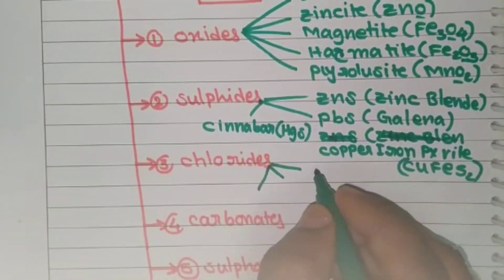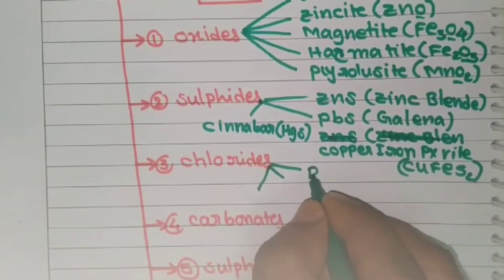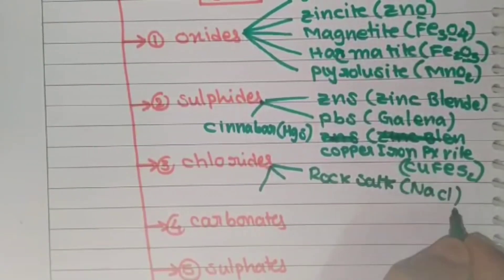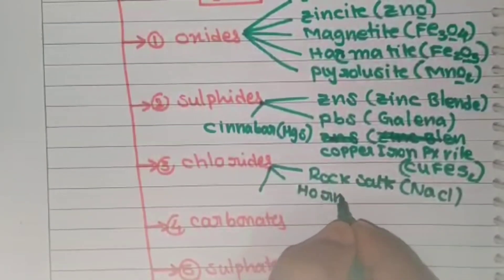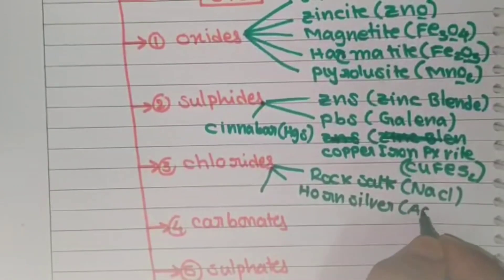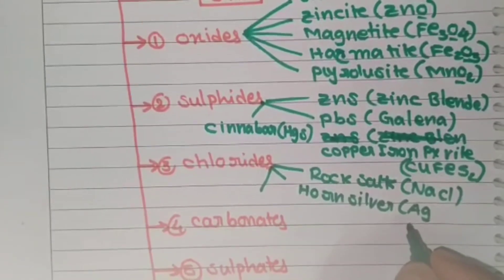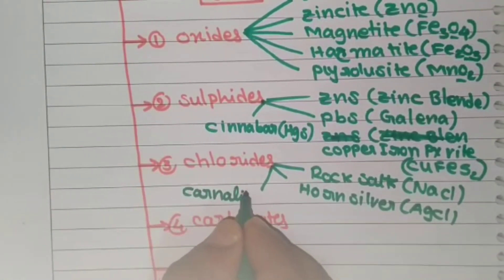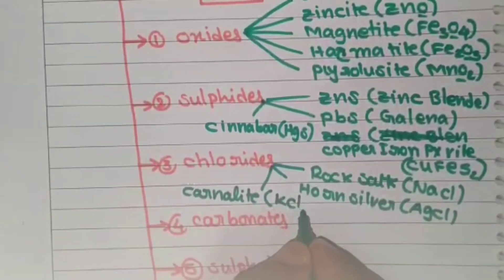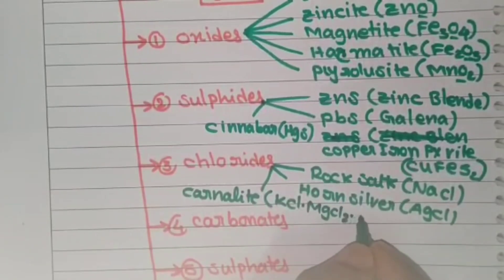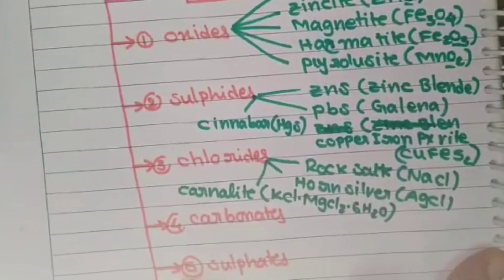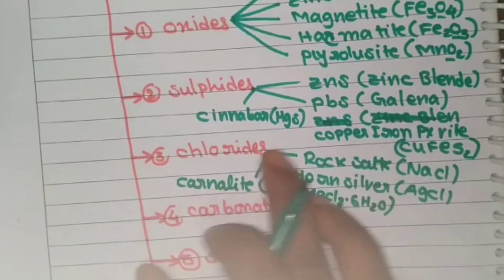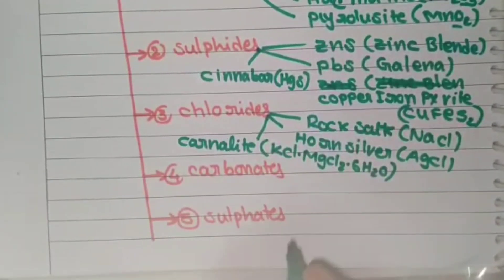Coming to the chlorides, there are only three. The first is rock salt, which is NaCl — the common salt. Next is horn silver, which is AgCl. Then the very important one — carnallite — with the formula KCl·MgCl2·6H2O. That formula for carnallite, KCl·MgCl2·6H2O, is very very important.